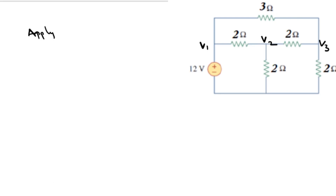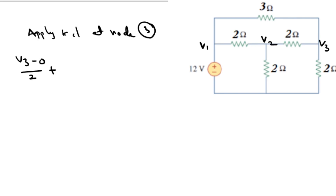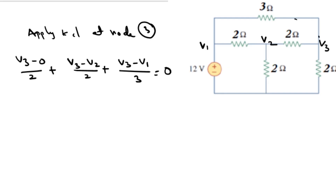Apply KCL at node 3. The equation is: V3 minus 0 by 2, plus V3 minus V2 by 2, plus V3 minus V1 by 3, equals 0. These three terms correspond to the currents leaving node 3 through each resistor.